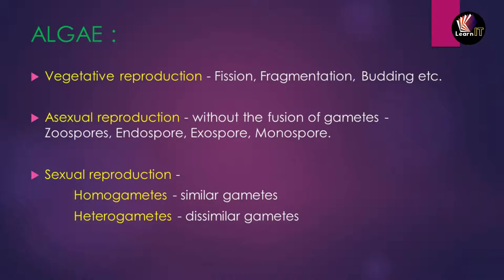Reproduction in algae is divided into three categories: vegetative reproduction, asexual reproduction, and sexual reproduction. In vegetative reproduction, types include fission, fragmentation, budding, and tubers — topics already discussed in chapter one. Asexual reproduction occurs without the fusion of gametes; examples include zoospores, endospores, exospores, and monospores.